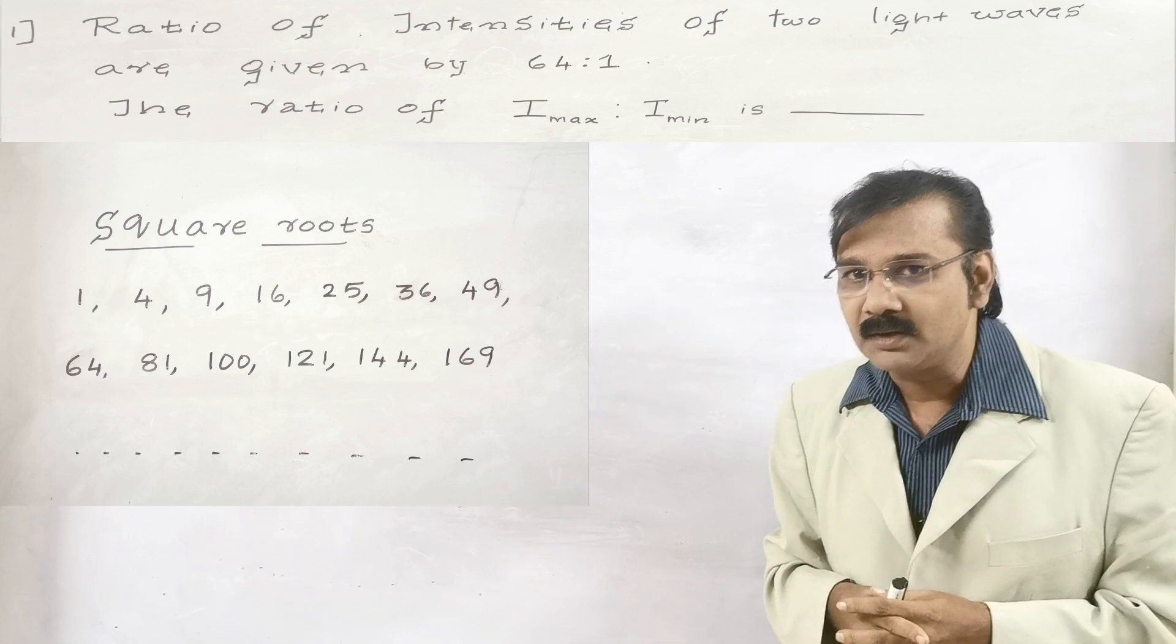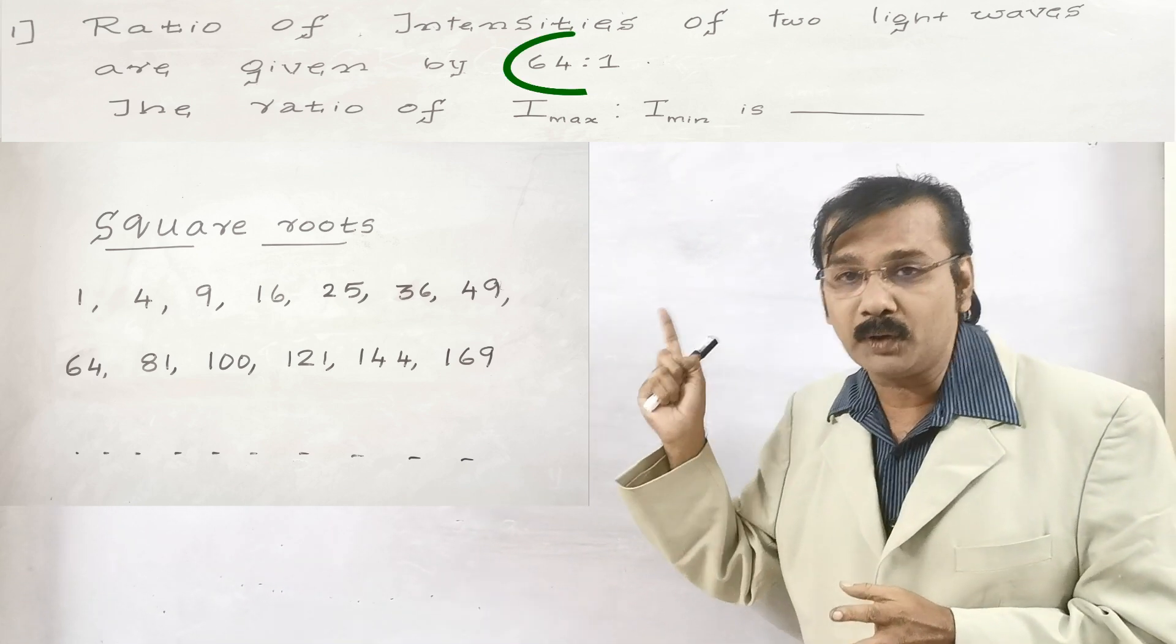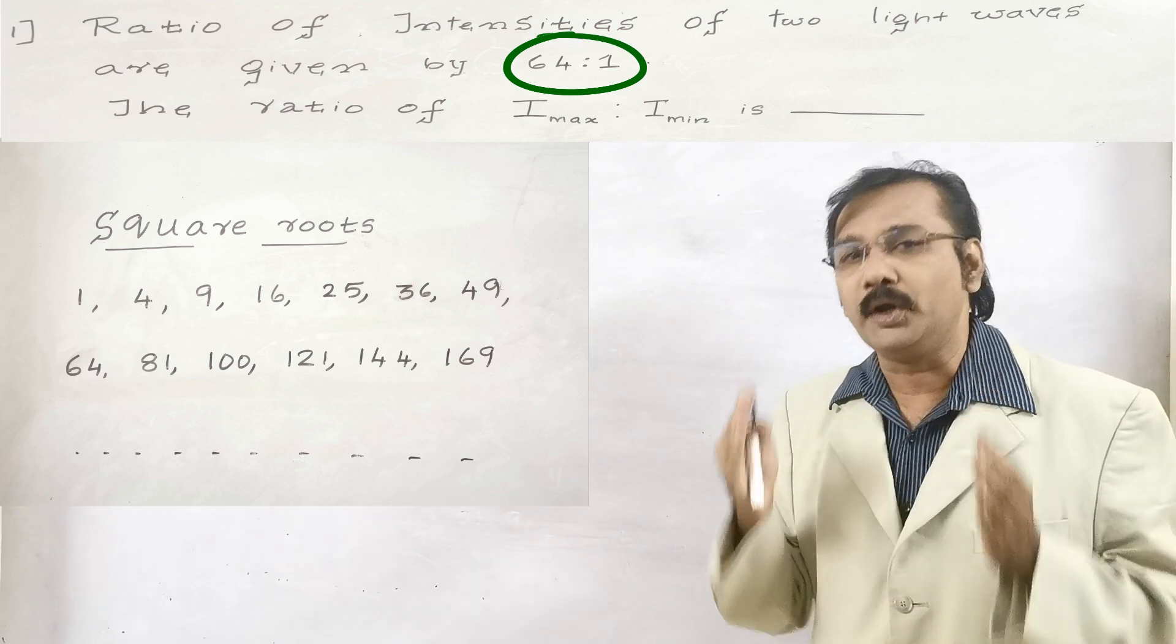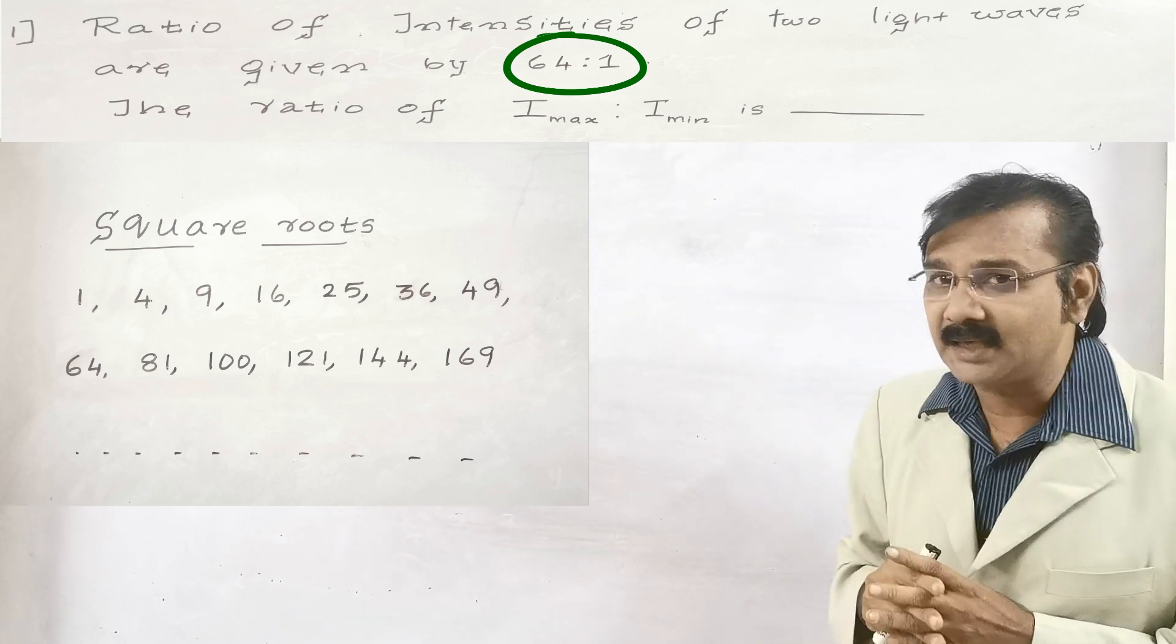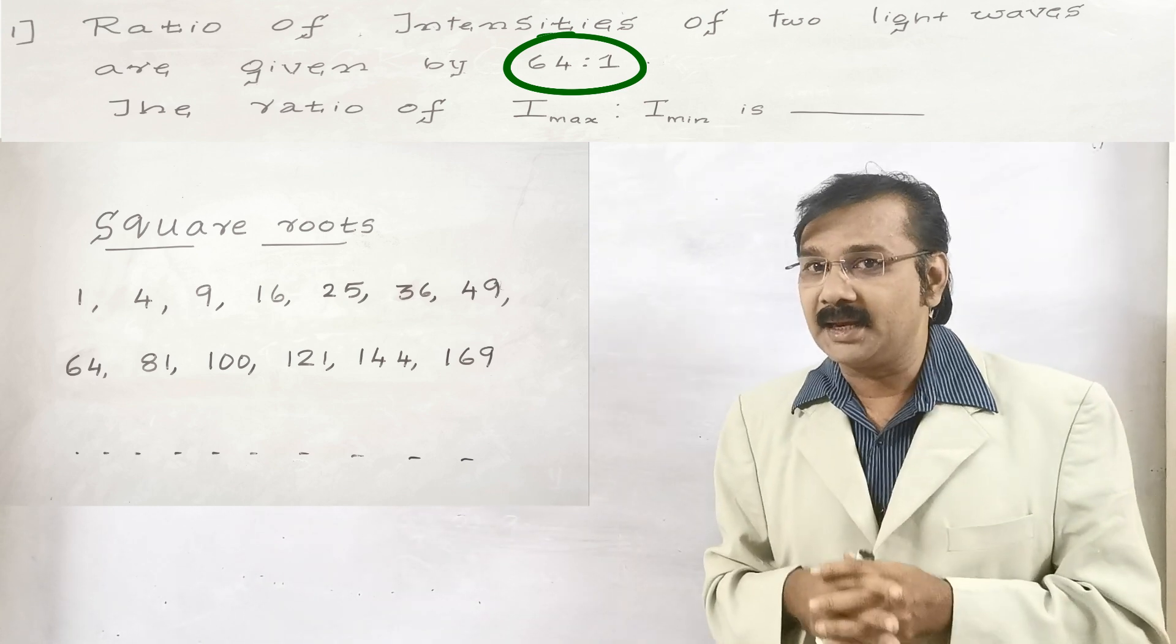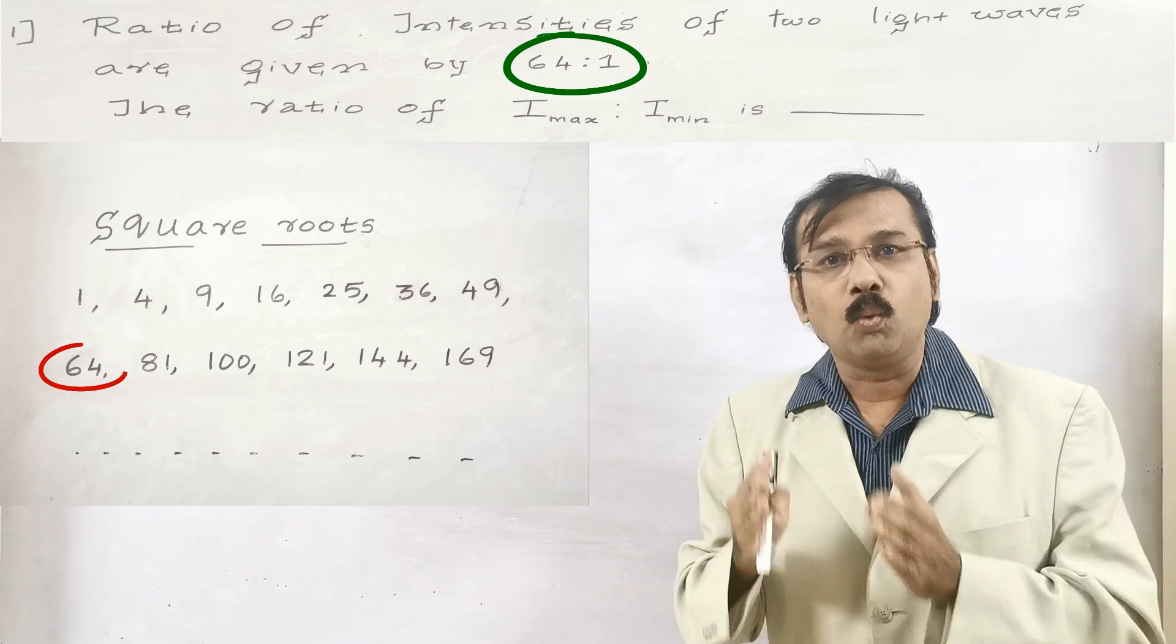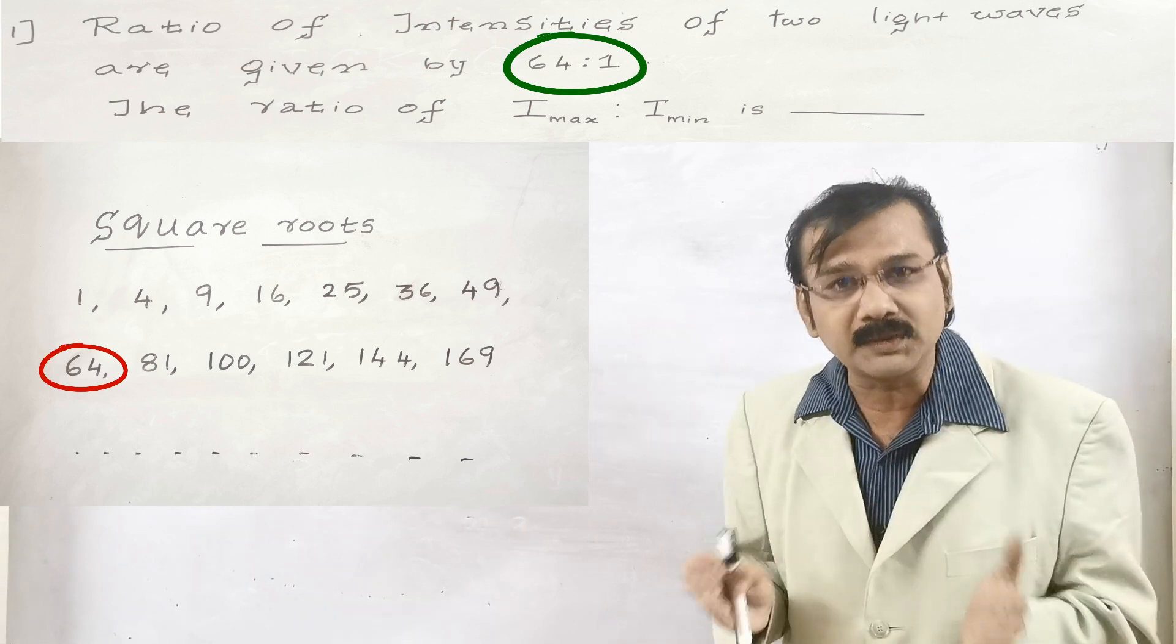Now what is the ratio given? It is 64 is to 1. Again I will circle it. 64 is to 1 is the given question. And now what you are going to do is, you are going to see the square root where that 64 comes. If you see the square root number, there is 64. You will tell me what is the number after 64 and what is the number before 64.